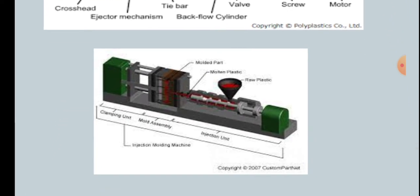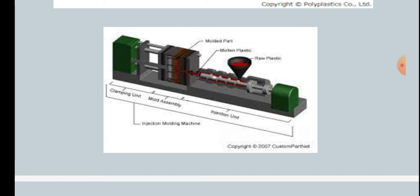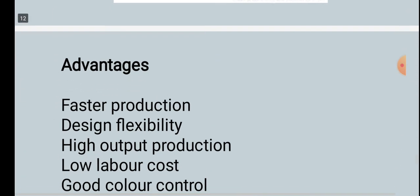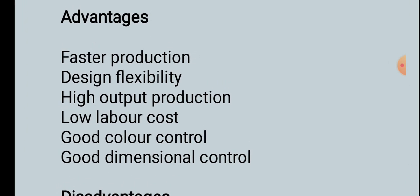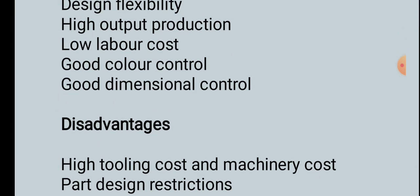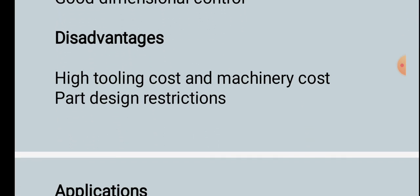This is also shown as a 3D model. Advantages: faster production, design flexibility, high output production, low labor cost, good color control, and good dimensional control. Disadvantages: high tooling and machinery cost, and part design restrictions. Applications include automotive components, electronic components, and toys. These are the polymer processing topics. Thank you.